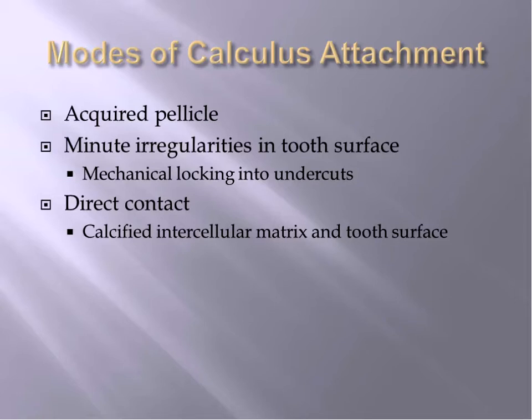The first mode is attachment by means of an acquired pellicle. The pellicle is a thin, acellular, homogenous layer positioned between the calculus and the tooth surface. Calculus attachment is superficial because there's no interlocking or penetration occurring. Pellicle attachment occurs most frequently on enamel and on newly scaled or planed root surfaces. Calculus can be removed fairly readily because of the smooth attachment.